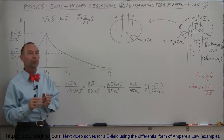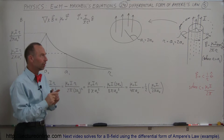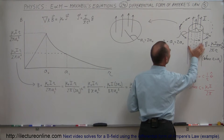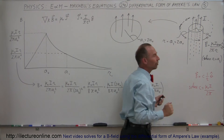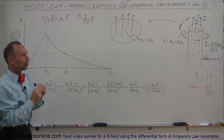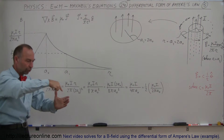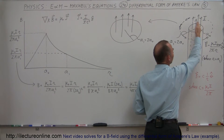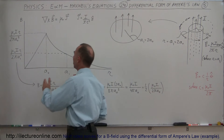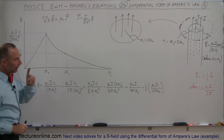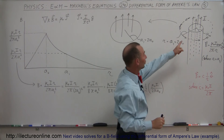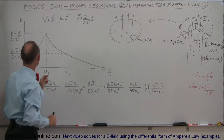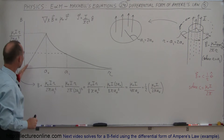In this video, we're going to show you how to use the differential form of Ampere's law to solve for a problem where the current density is within a certain region and you want to find the B field outside that region. When you're inside the region where the current is flowing, the relationship between the B field and the position away from the center — from the center out to the edge of that region — is a linear relationship.